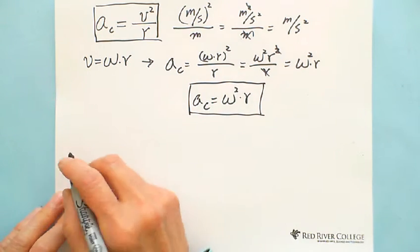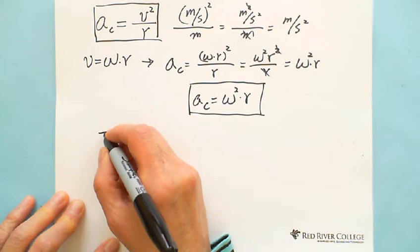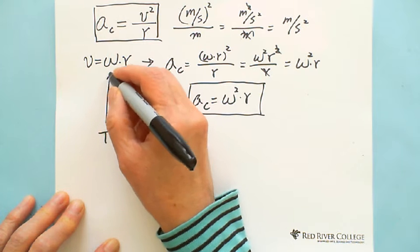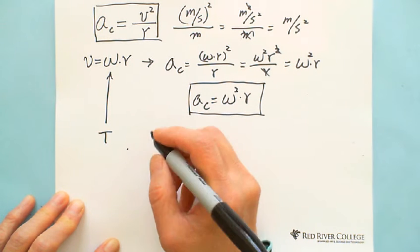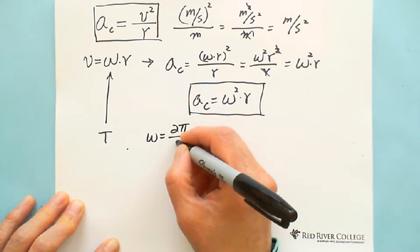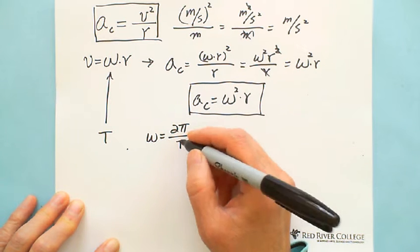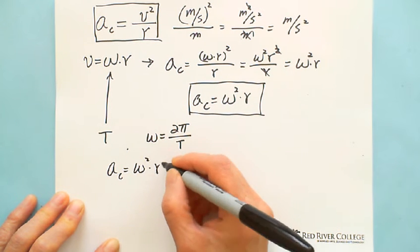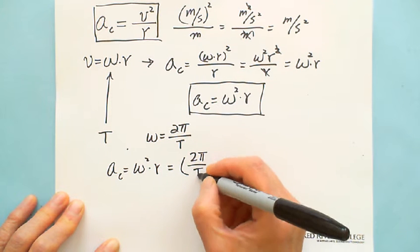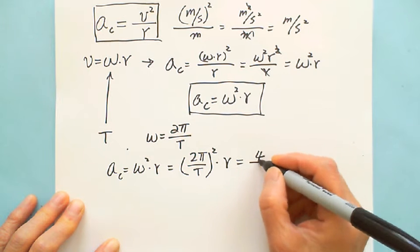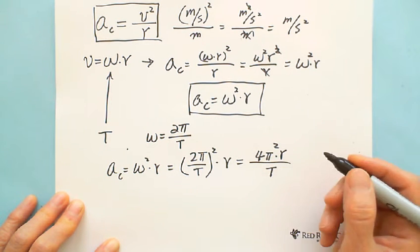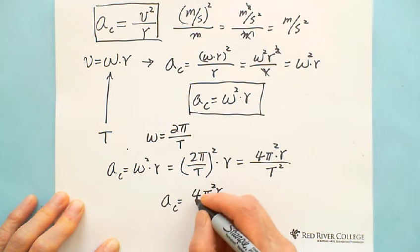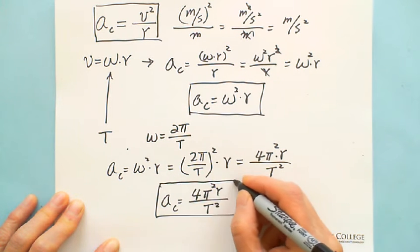For the third formula, if you are given the period T, we use the relation that angular velocity equals 2π divided by T. Substituting, acceleration equals omega squared times R becomes 2π over T, squared, times R, which gives us 4π² times R over T squared. This is the third formula.